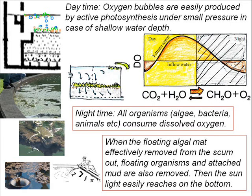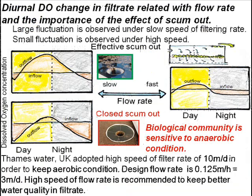In the daytime, oxygen bubbles are easily produced by active photosynthesis under low pressure in shallow water depth. In the nighttime, all organisms consume dissolved oxygen. When the floating algal mud is effectively removed from the scum outlet, the floating organisms and attached mud are also removed, then sunlight easily reaches the bottom again and algae at the bottom grows again. A diurnal change in filter rates related to flow rates shows large fluctuation under low filter rate and small fluctuation under high speed.